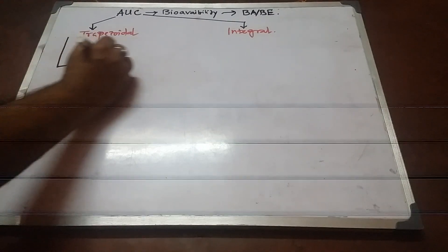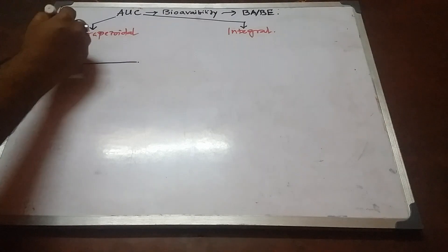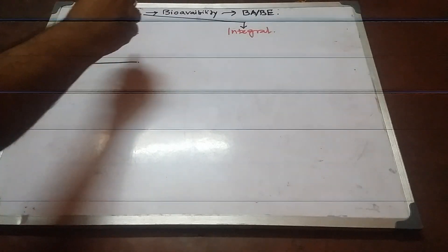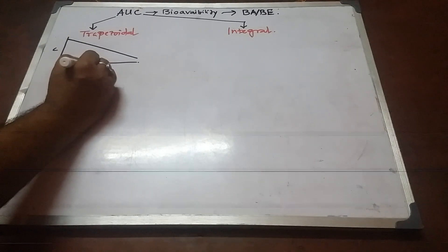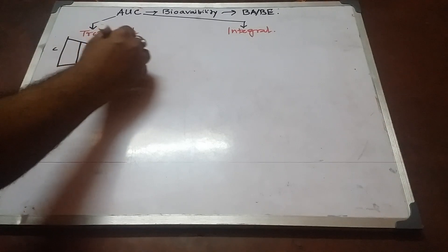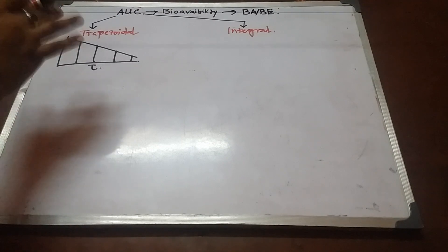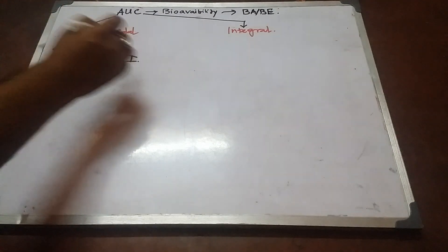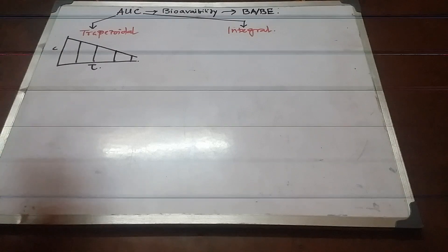In the trapezoidal method, if we take a graph paper, instead of a curve we get a straight line on the concentration versus time plot. We can make small sections of the area under the curve. This is the area under the curve for IV bolus, unchanged drug in blood plasma. As you can see, we have created small sections of trapezoids.